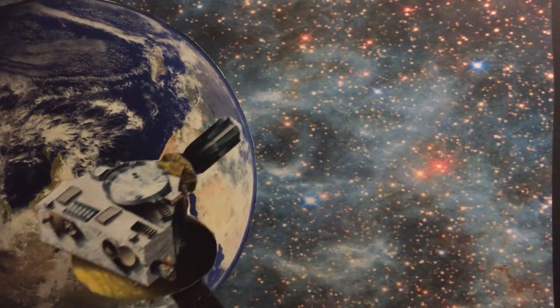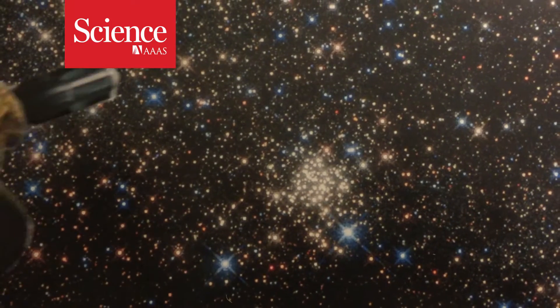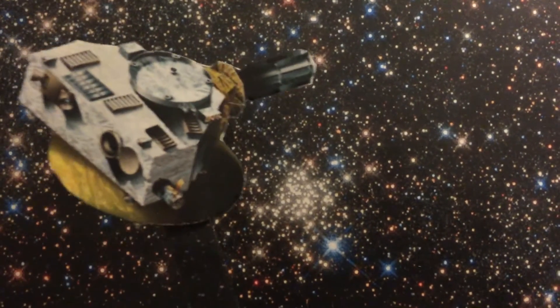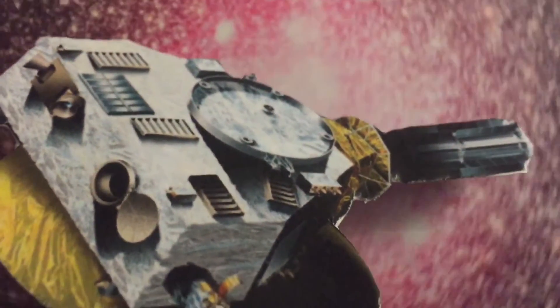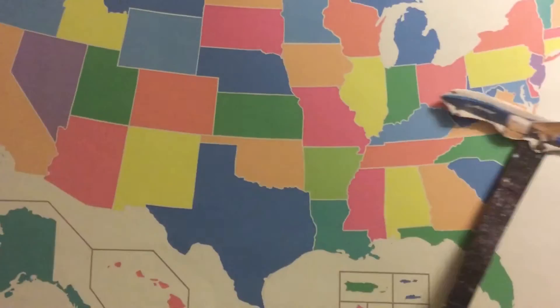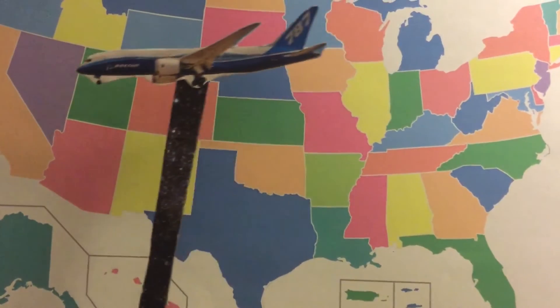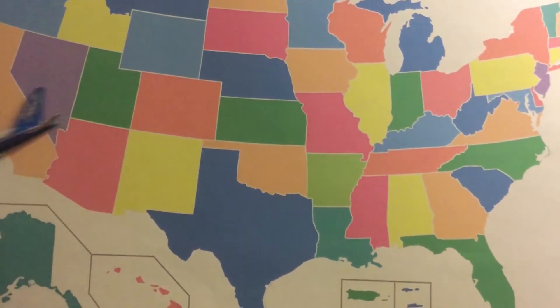The New Horizons is the fastest spacecraft to leave Earth's orbit. At its closest approach to Pluto, it flew by at 50,400 kilometers per hour. At this speed, you could get from New York to Los Angeles in less than five minutes.